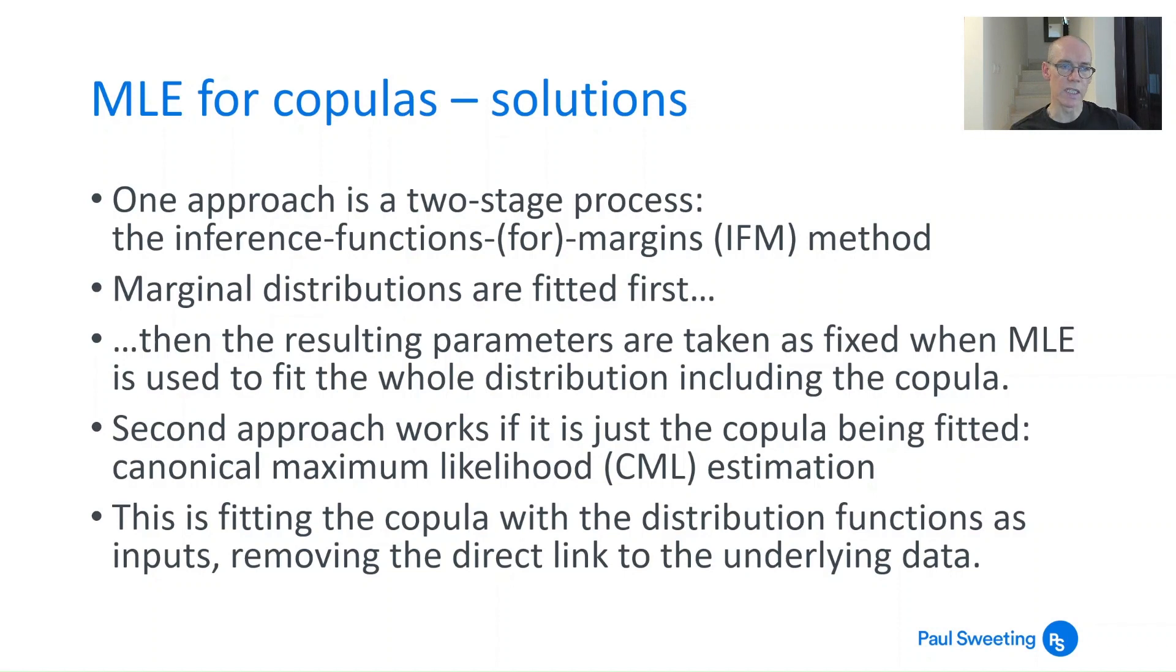The second approach works if you are truly only looking at the copula. You essentially ignore the marginal distributions because you are using just a copula, and the inputs become the distribution functions for those marginal distributions. That approach is called canonical maximum likelihood, or CML estimation. Often these two approaches will give you exactly the same results, but strictly speaking they are slightly different. In practice they're going to be different if there is some link between the copula you're using and the marginal distributions.